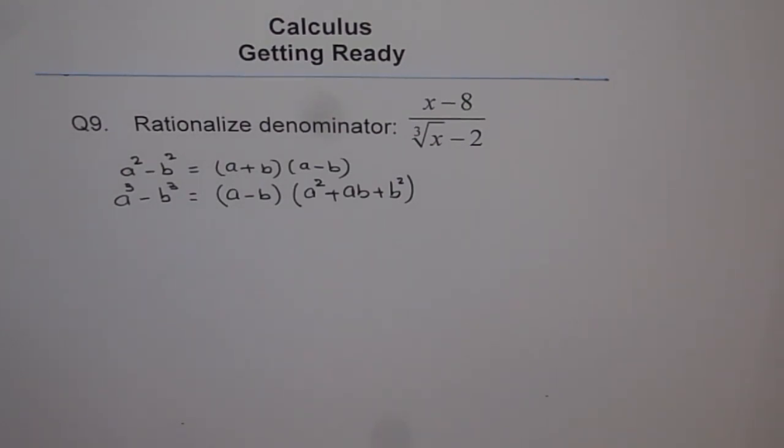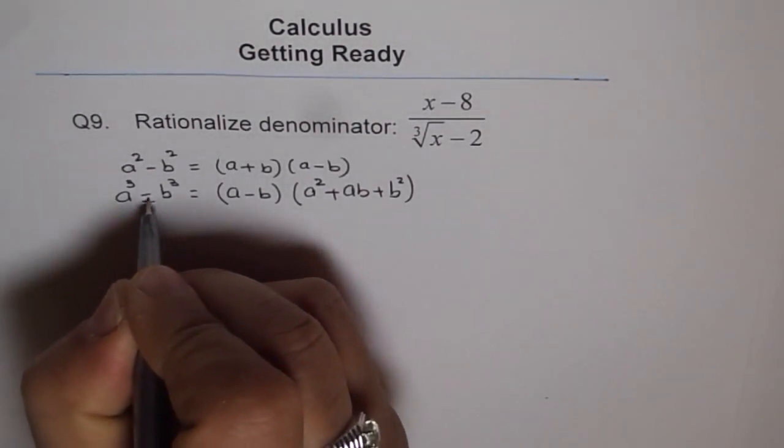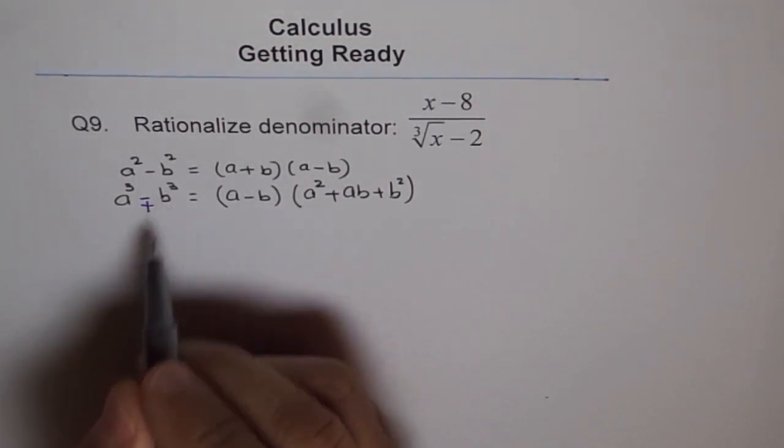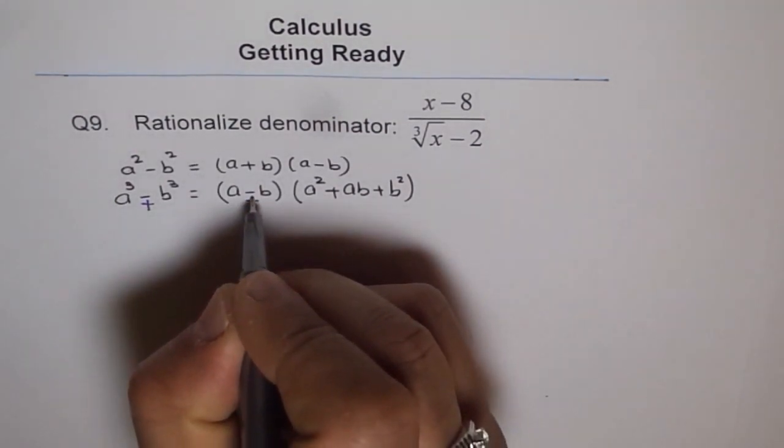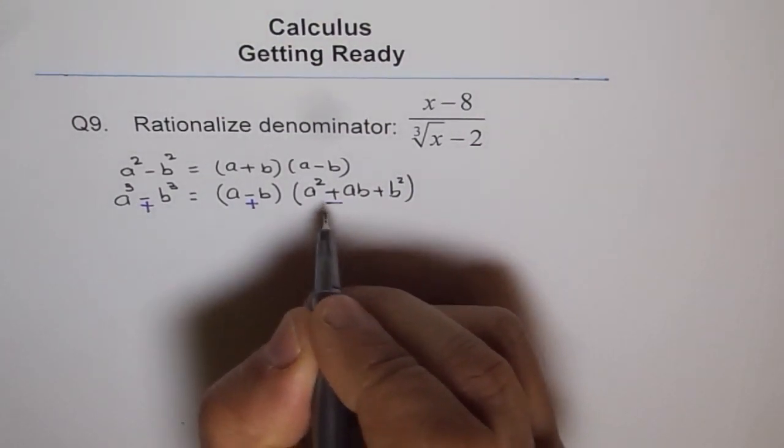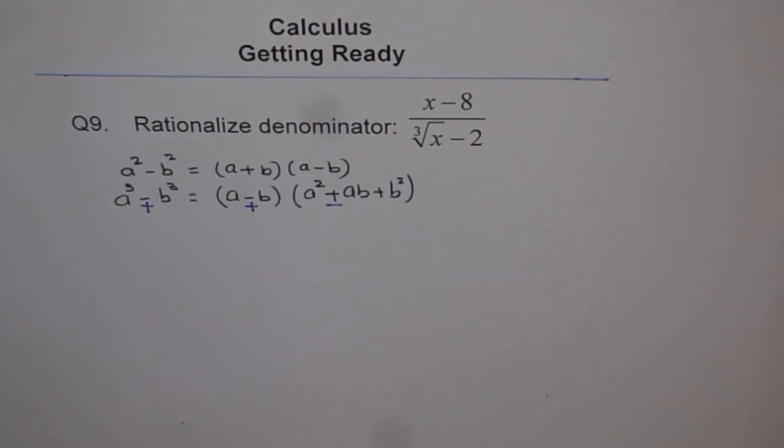As far as the cubes are concerned, you could also rationalize sum of cubes. If we have a cube plus b cube, in that case, it is a plus b times a square minus ab plus b square. Both difference of cubes or sum of cubes can be rationalized with the technique I am just going to show you.